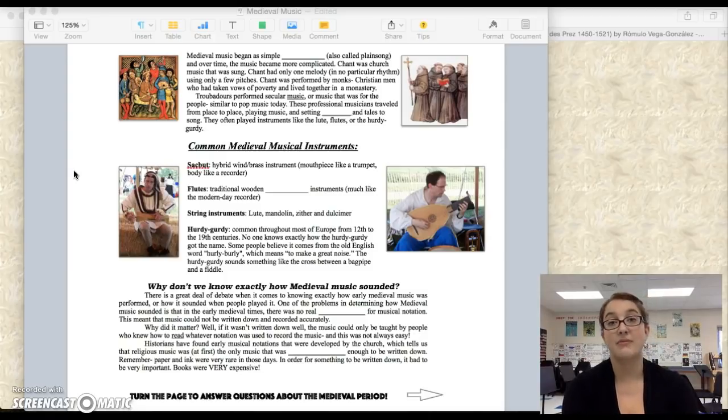Troubadours were kind of the opposite of monks. Monks over here on the right, troubadours on the left. Who looks like they're having a better time? Troubadours were more like pop stars of the day. They were like the partygoers, right? And they performed pop music, or secular music. Troubadours performed secular music, or music that was for the people, similar to pop music today. They were professional musicians, and they traveled around from place to place. Sometimes there was a troubadour that was employed at a court, and they would stay there for a while. But for the most part, they traveled a lot.